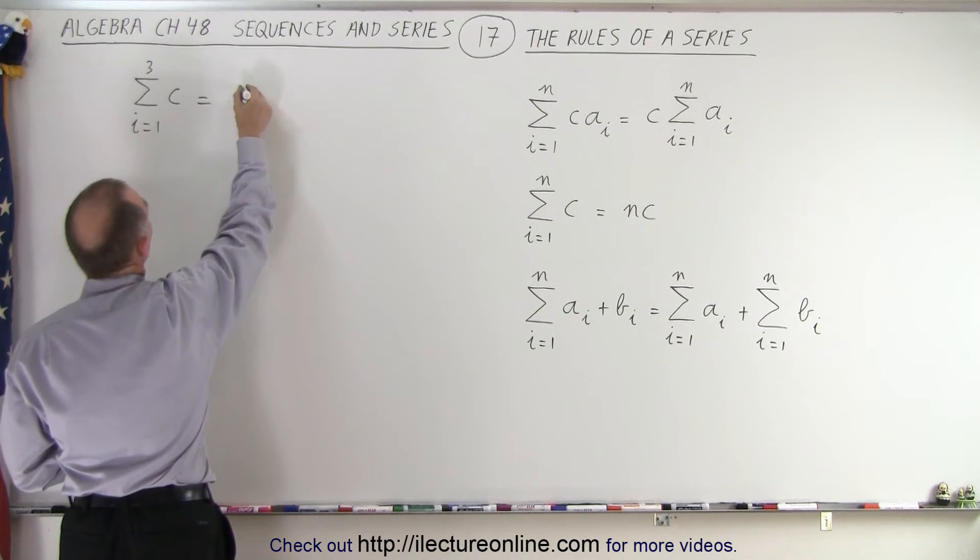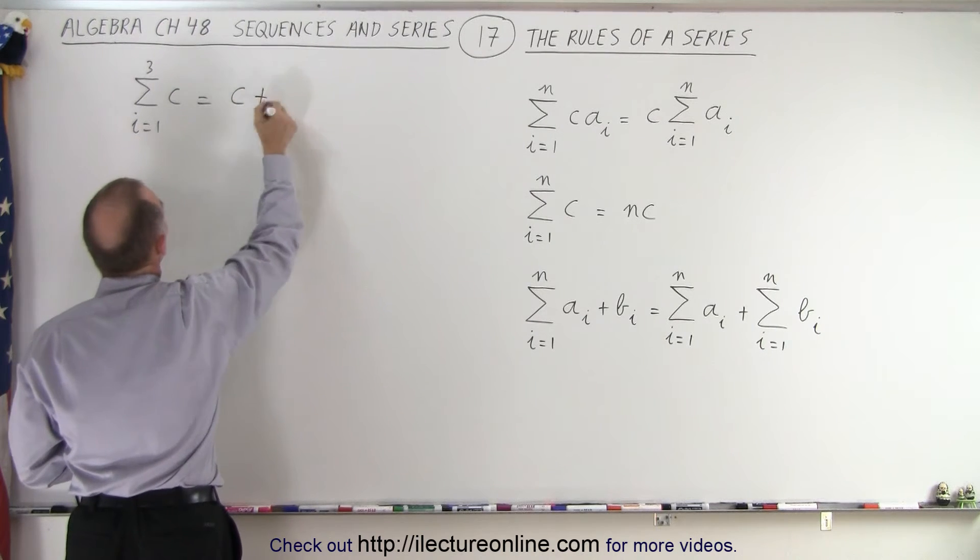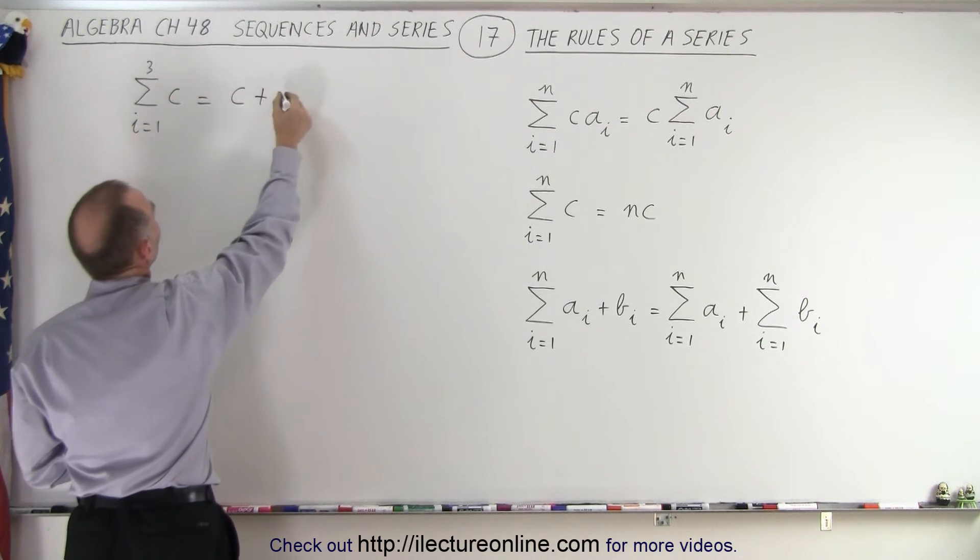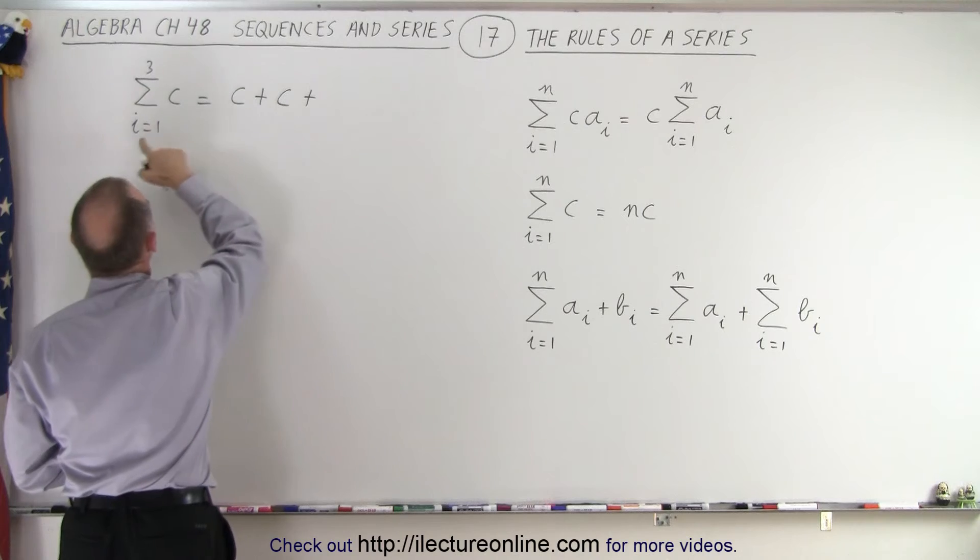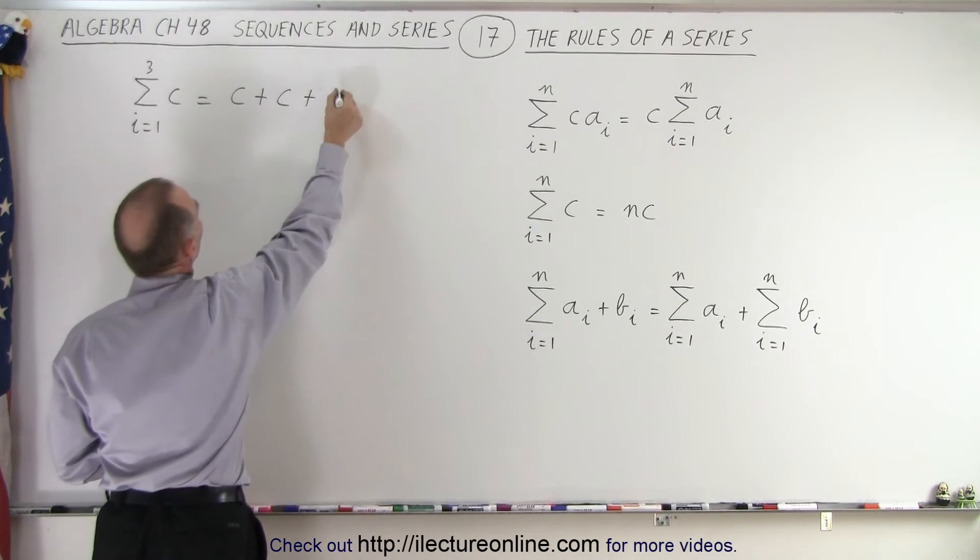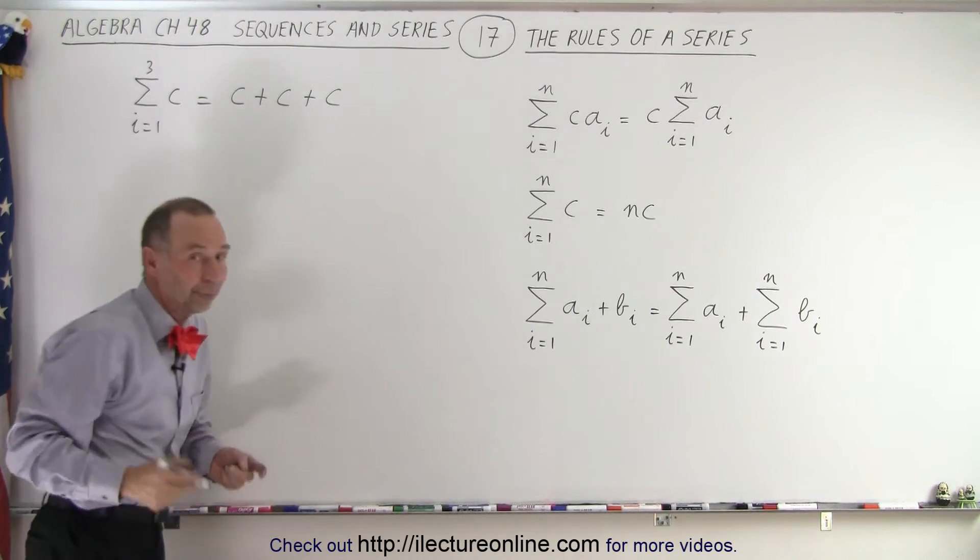Plus when i is equal to 2 we get c again, plus when i is equal to 3 we get c again. There's only going to be three terms because the limit is three terms, so this is equal to 3 times c.